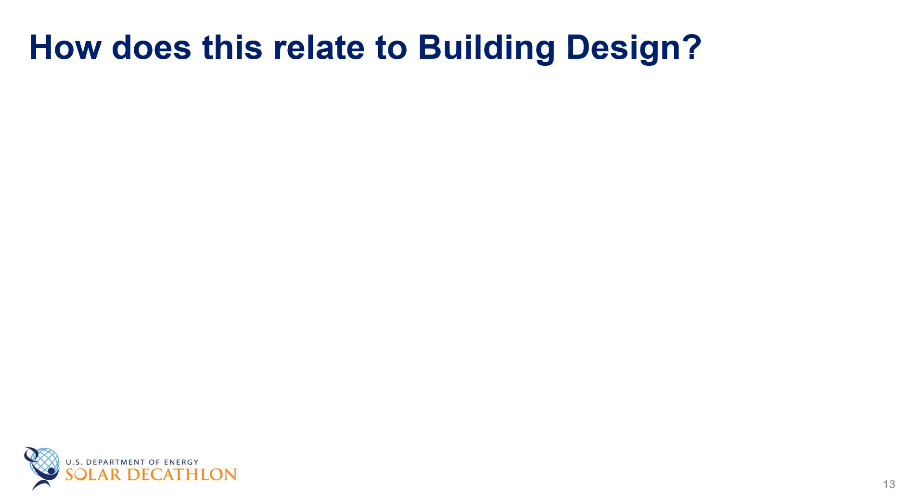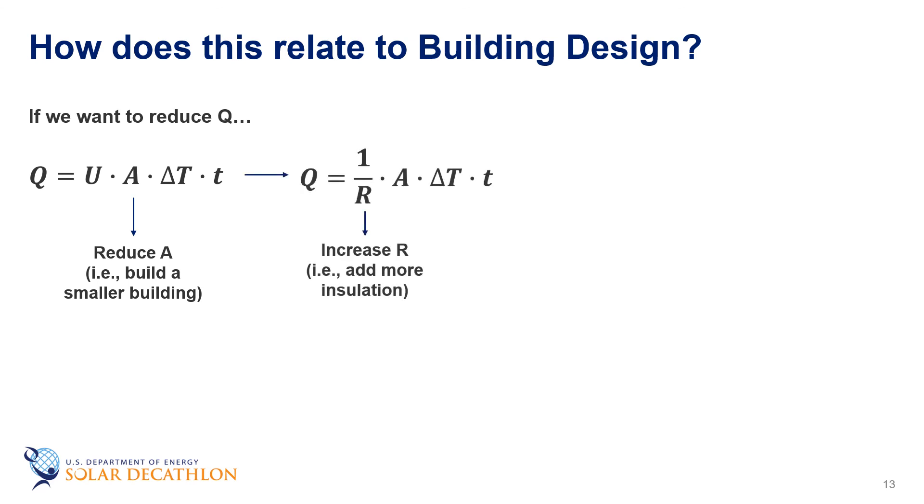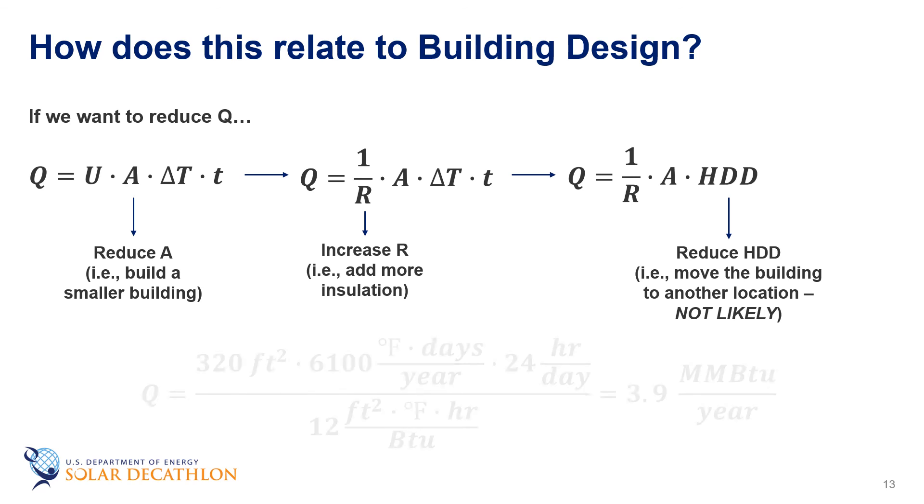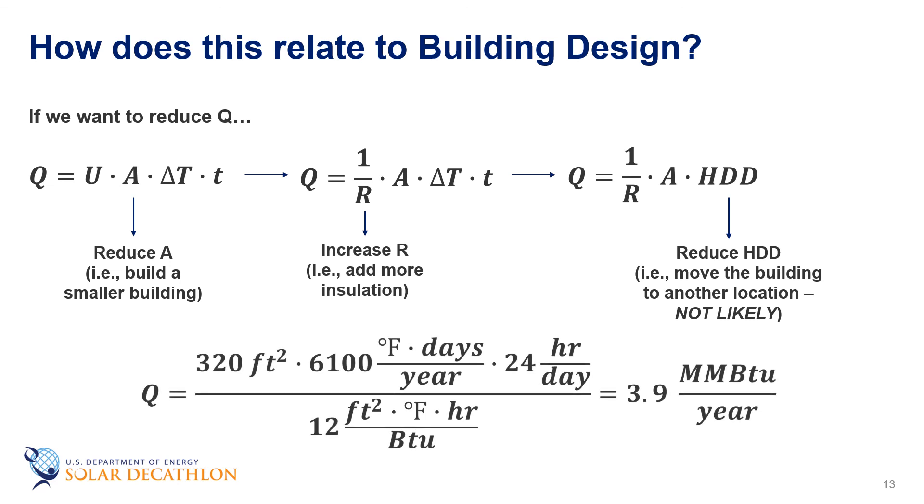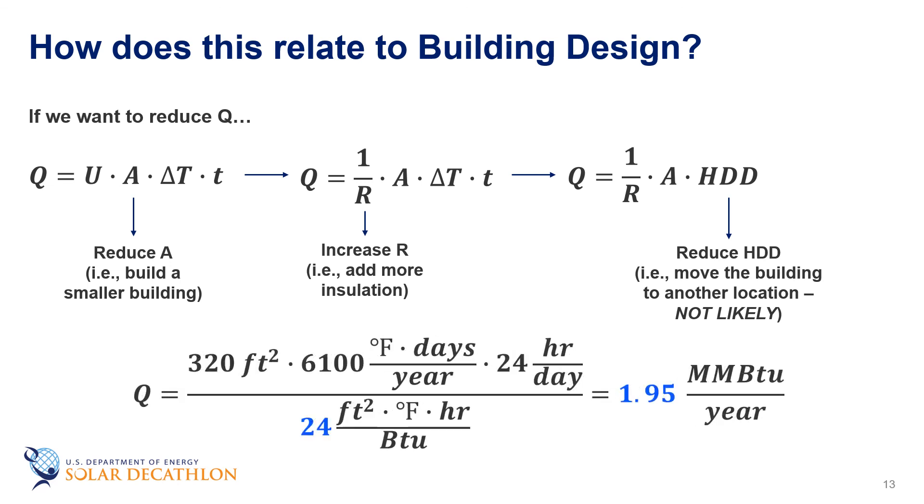Starting to think about design, we can reduce this number by having a smaller wall, i.e. a smaller building, increasing the value of R, or reducing the number of heating degree days by moving the building to another location, which is probably not likely. Often the solution is to choose to increase the insulation. So, for example, doubling the insulation from R12 to R24 will reduce the heat transfer in half to 1.95 million BTUs per year.